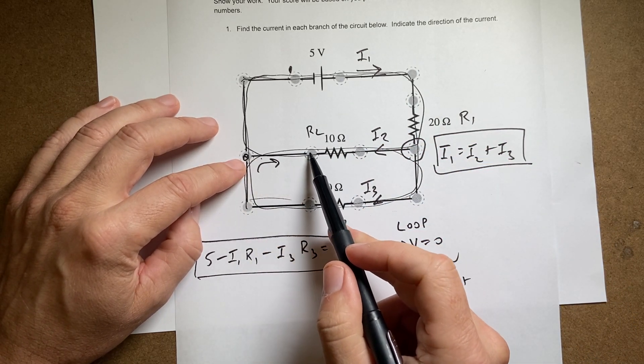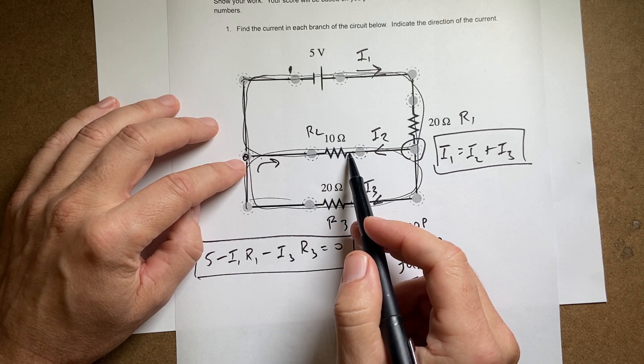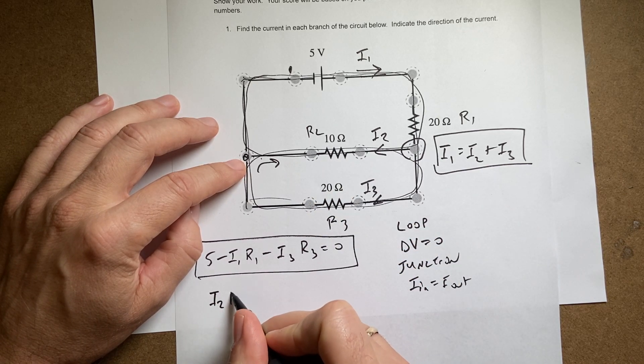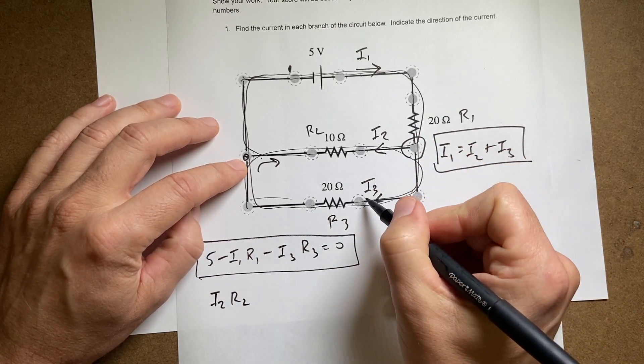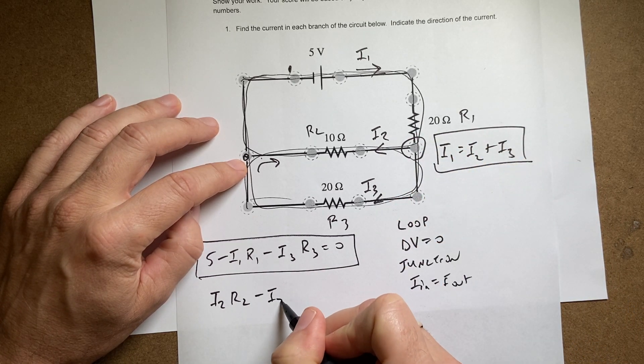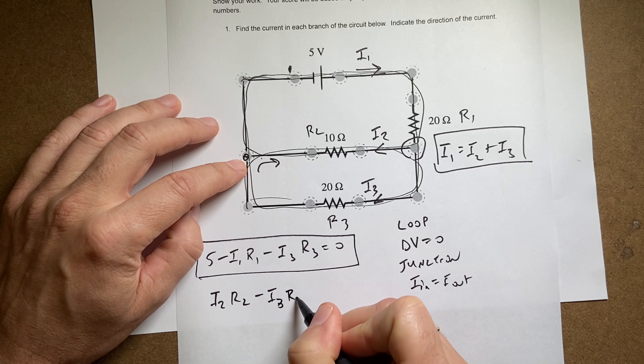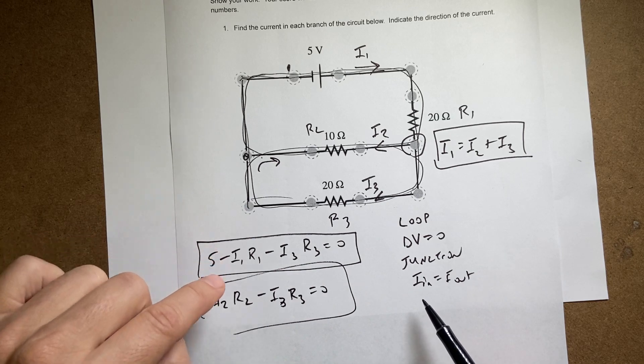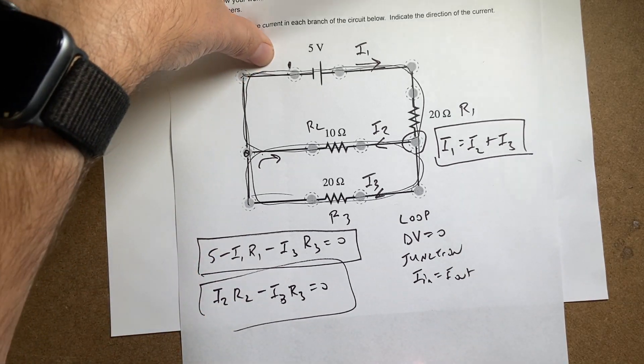Okay so if I go this way I'm going against the current. So I'm gonna have a positive voltage drop across this. It's gonna be I2 R2. Now I'm going over here going with I3. So it's gonna be minus I3 R3 equals zero. So now I have one, two, three equations, three variables. Now we get to solve.